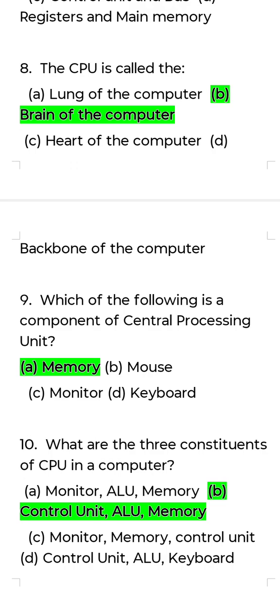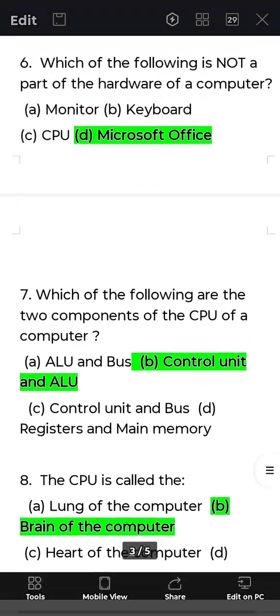Eighth question: What are the three components of the CPU in a computer? Answer: Control Unit, ALU, and Memory.